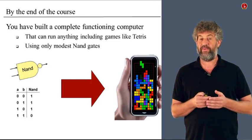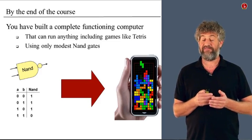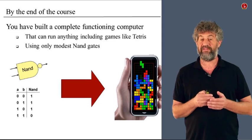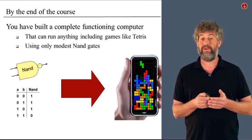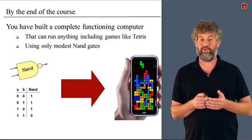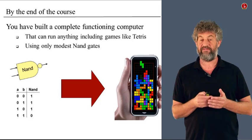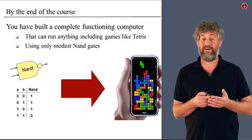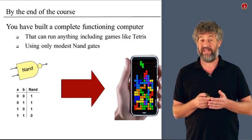So by the end of the course, what have we achieved? By the end of the course, after a few weeks of actually, every week, building upon the previous layer, we get the complete functioning computer. A computer that starts with very basic building blocks called NAND gates, which are very simple logic gates. And ending with a computer that can run almost any program, for example, the Tetris that gives this course its name.